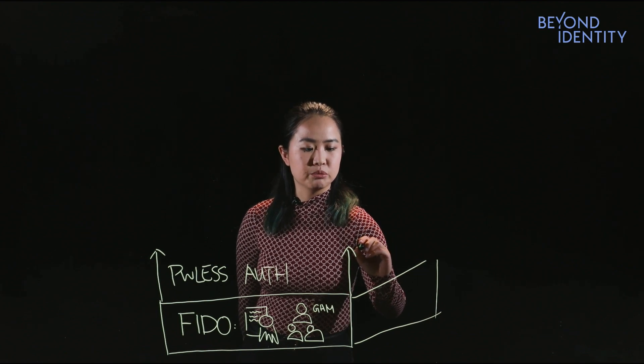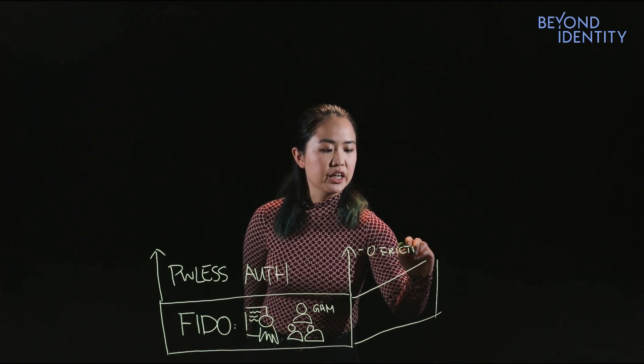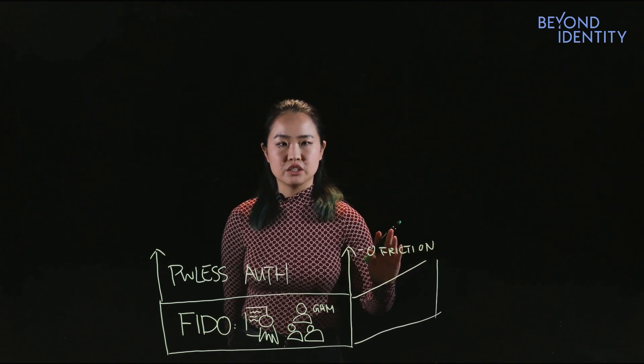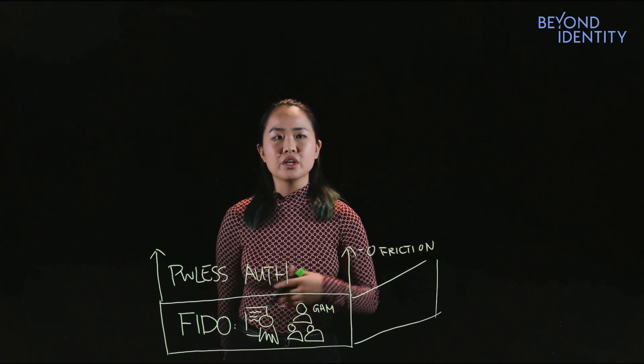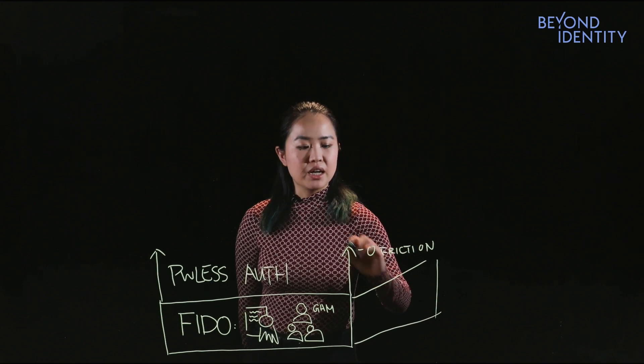Well, passwordless authentication should be zero friction, and the way to achieve zero friction is to make sure that the user is only using one singular device to authenticate, that there's no second device involved, which also, when there's second devices involved, there's also a security risk involved with that.